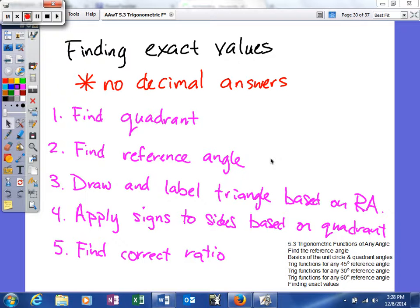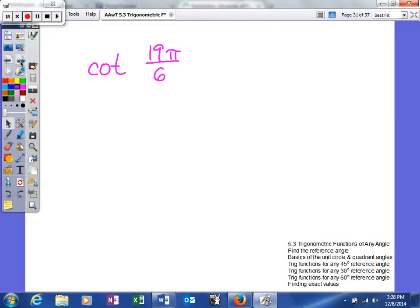And then we're going to apply the signs to the sides based on the quadrant. So obviously some quadrants the x's are positive and the y's positive. Others, they may change based on the quadrants. And lastly, we're going to find the correct ratio. So let's look at an example.